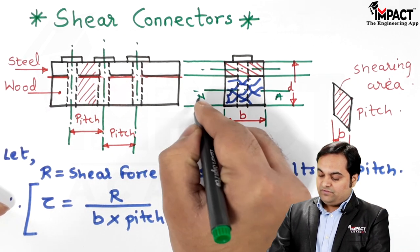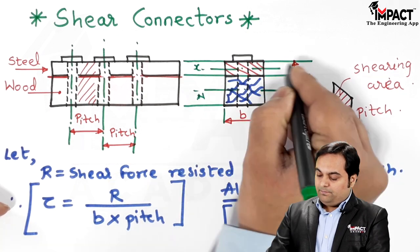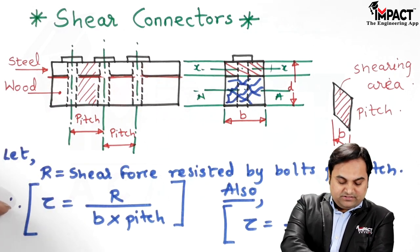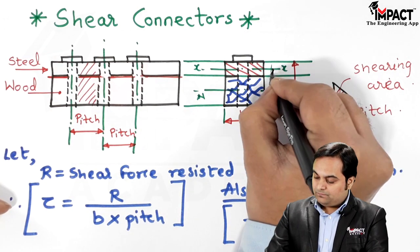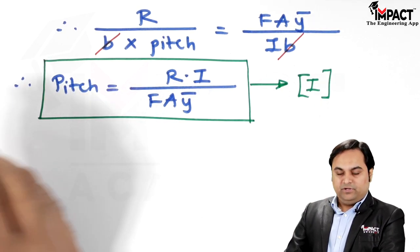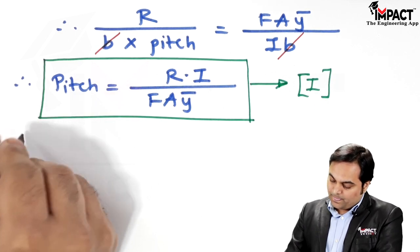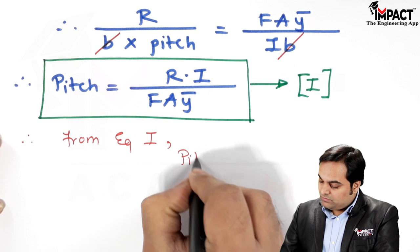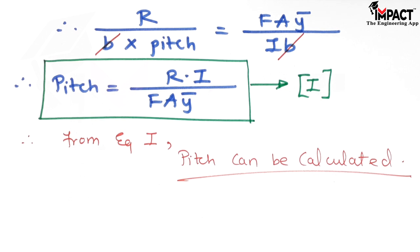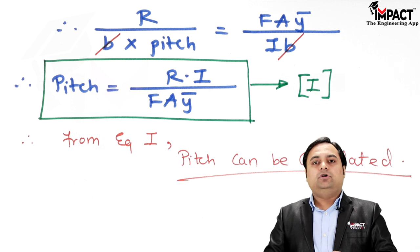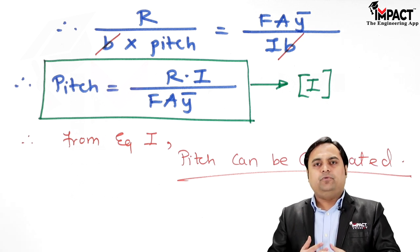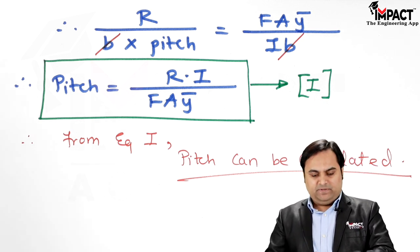Ȳ is the distance from the neutral axis of the system to the centroid of the area considered — that is, the distance between the neutral axis and the shaded area. B is the width of the section. Using Equation 1, we can calculate the spacing or distance at which bolts, rivets, or nails should be placed to obtain a composite beam that properly resists the applied shear force.